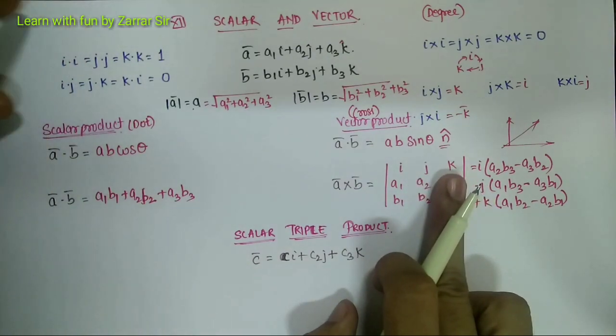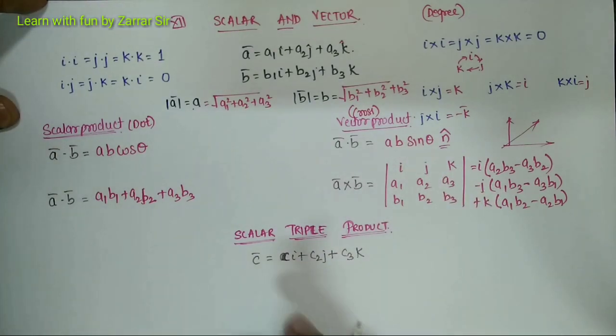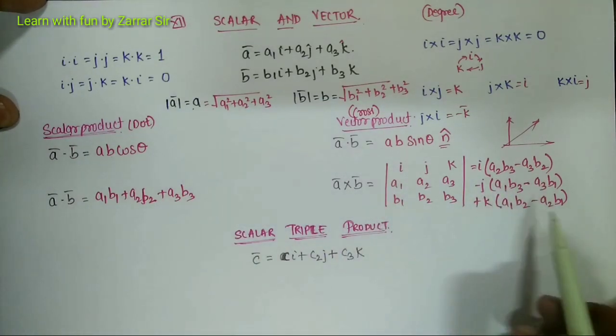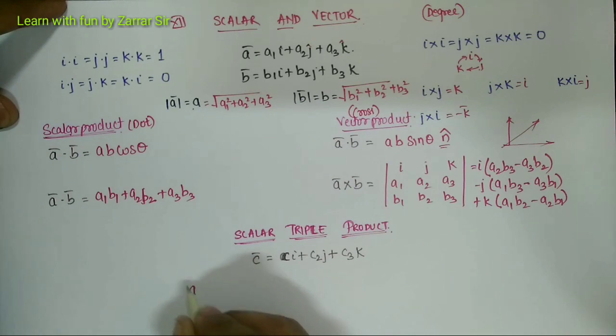Now finally, scalar triple product and how to solve scalar triple product. This is very important. As the name suggests, scalar means the value should be scalar - it should not contain i, j, k. Vector means it should contain i, j, k. The final is a bar cross b bar dot c bar.